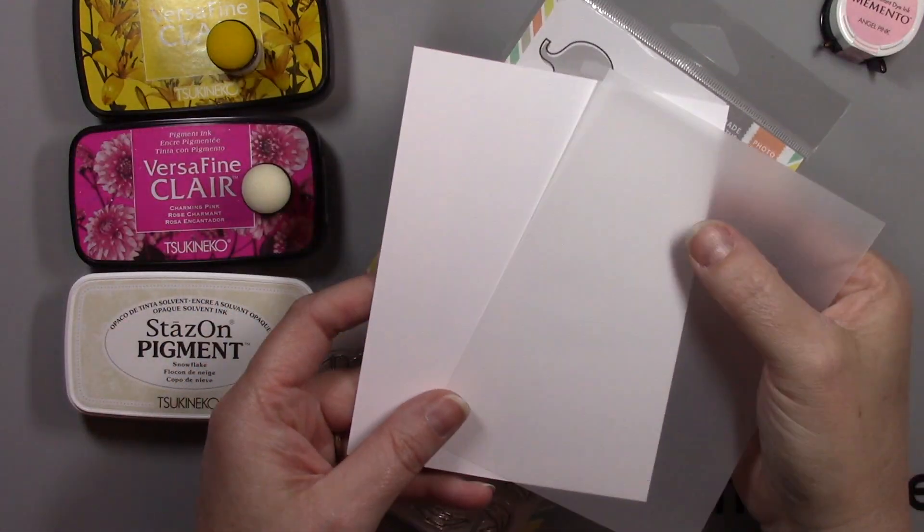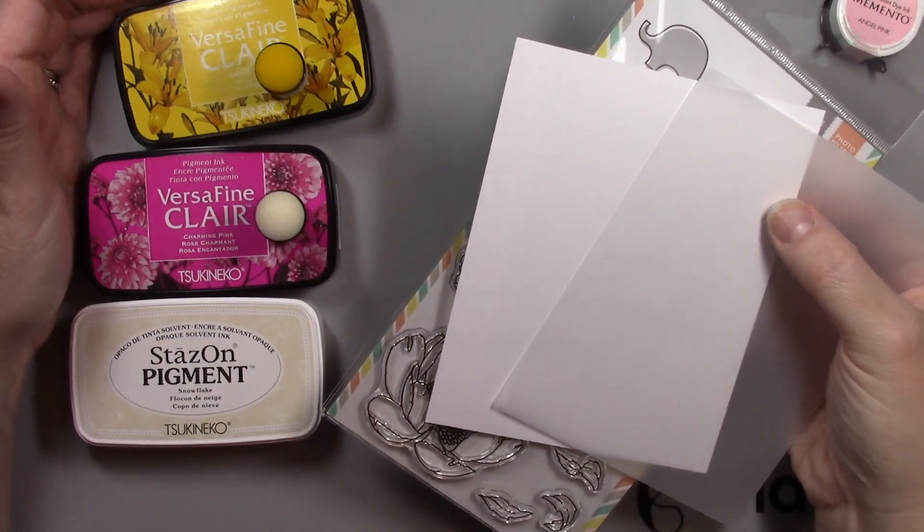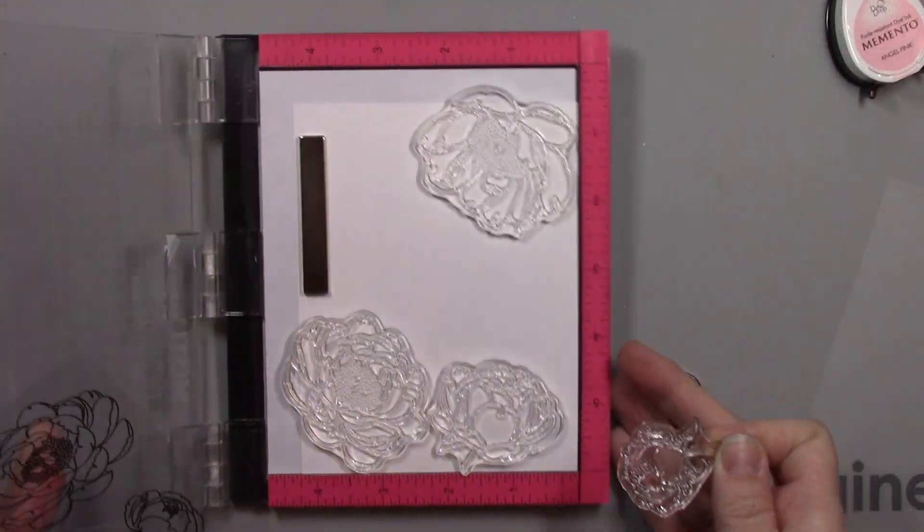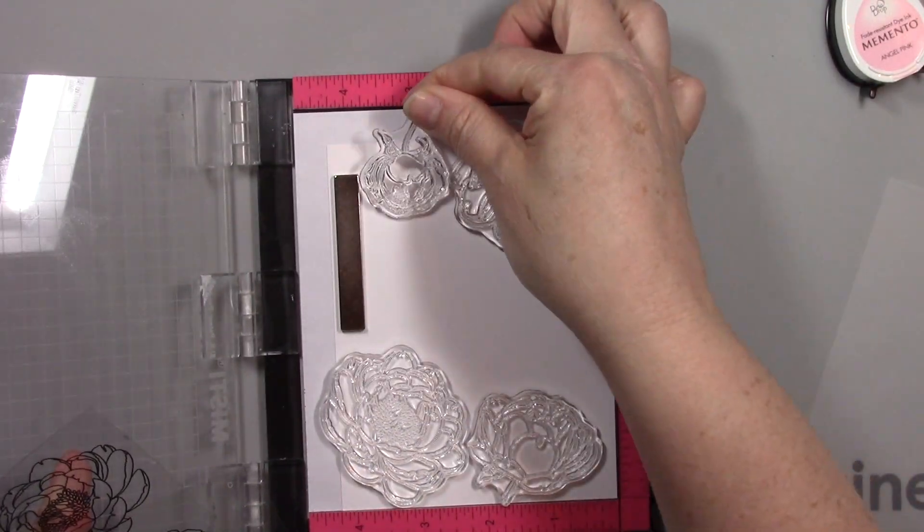I'll be using some white cardstock, some vellum, my VersaFine Clair inks, and the new Stazon Pigment inks, as well as Memento ink.